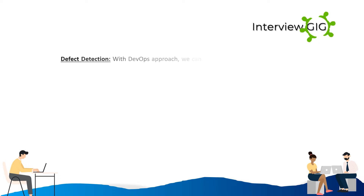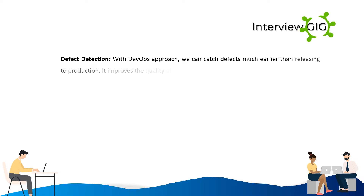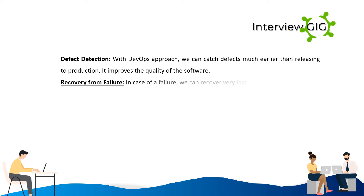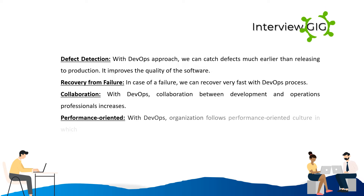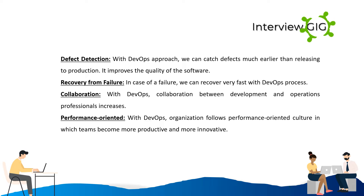Further benefits include: Defect detection — with a DevOps approach, we can catch defects much earlier than releasing to production, improving software quality. Recovery from failure — in case of failure, we can recover very fast. Collaboration — collaboration between development and operations professionals increases. Performance-oriented — organizations follow a performance-oriented culture in which teams become more productive and more innovative.